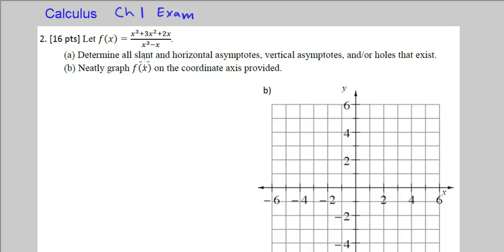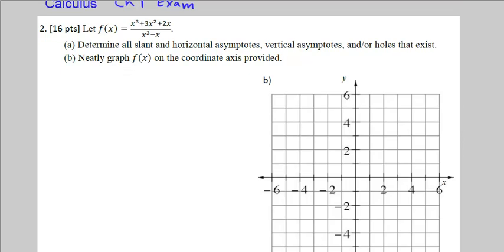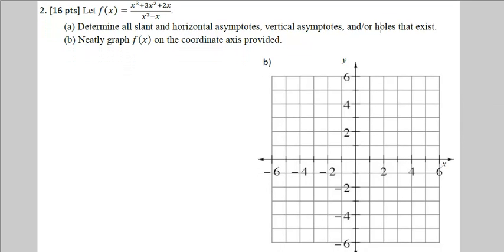We want to determine all slant and horizontal asymptotes, vertical asymptotes, and or holes that exist. And then we want to sketch it on this grid right here.